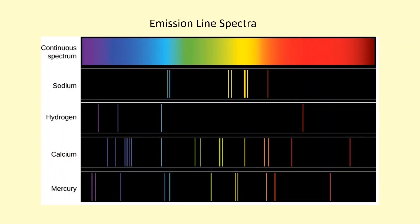This de-excitation process leads to something called emission line spectra. Taking hydrogen as an example, hydrogen emits four different photons, each corresponding to a different energy level transition. The red one on the right-hand side corresponds to a small energy gap, because red is a low energy photon. The violet corresponds to a large energy gap transition — when the electron de-excites and emits a photon with very high energy, and that corresponds to violet light.